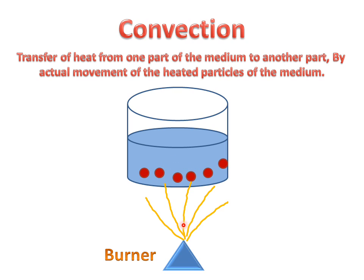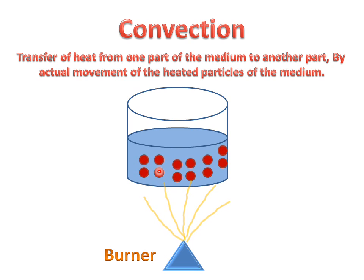What will happen? When the burner gives heat to the container, the heated particles will go upward and the cooled particles will go downward. The heated particles give heat to the surface, and the surface particles go down for heating. This process is repeated again and again, and the whole water in the container is heated by this process.